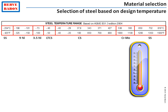This shows the material selection as per the usual piping code, indicating that stainless steel will go down to minus 254°C. And if one needs to operate at temperatures up to 800°C, one also has to use stainless steel.